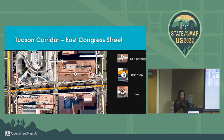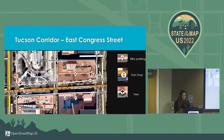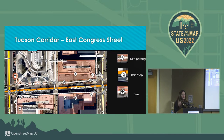I wanted to pull an example from Tucson. Unfortunately it's not super well mapped, so I mapped a little bit for this. I chose this corridor since it had interesting points of interest. This snippet is East Congress Street. You can see some of the assets: it has bike parking, a tram stop, some trees — but you can also map a lot more. There are certainly benches there, waste bins, parkings. Even with just the information here, which is not a lot, a city could benefit.